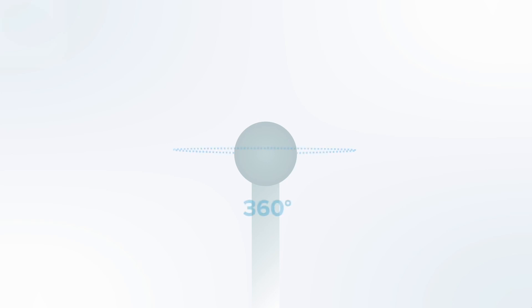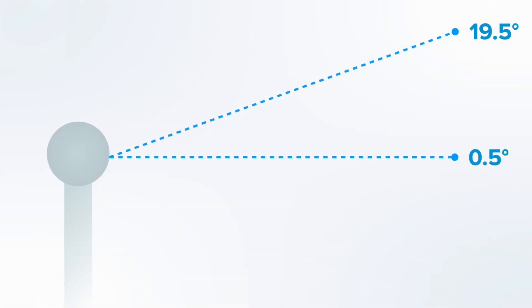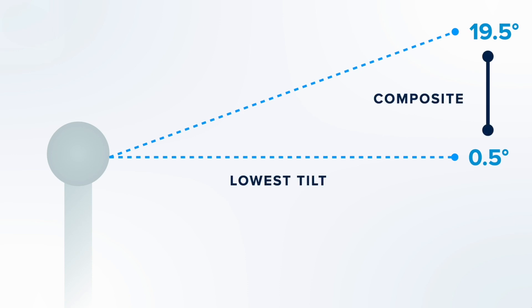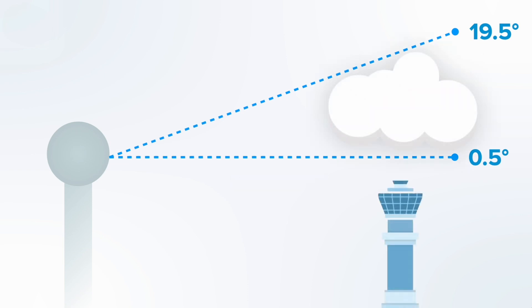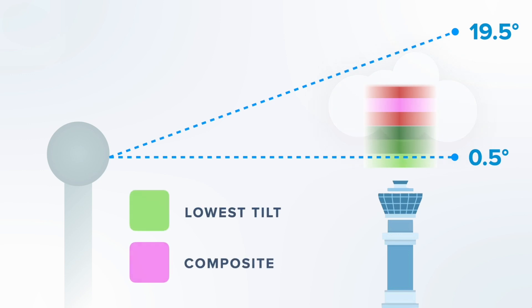There are as many as 14 different scan angles so they can look quite high. Lowest Tilt uses the lowest one — it's a half a degree above the horizon — and that gives you the best sense of the intensity of the precipitation near the ground level.